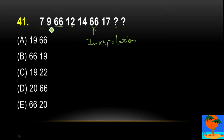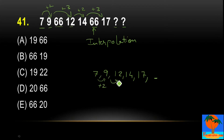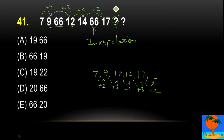We can see 7, 9 — that is plus 2. Then 9, 12 — that is plus 3. Then 12, 14 — it is plus 2. And then 14 to 17 — it is plus 3. So the series is: 7, 9, 12, 14, 17. The pattern alternates plus 2, plus 3, plus 2, plus 3 — so definitely next is plus 2. We will add 2, so in this question mark it should be 17 plus 2, that is 19.